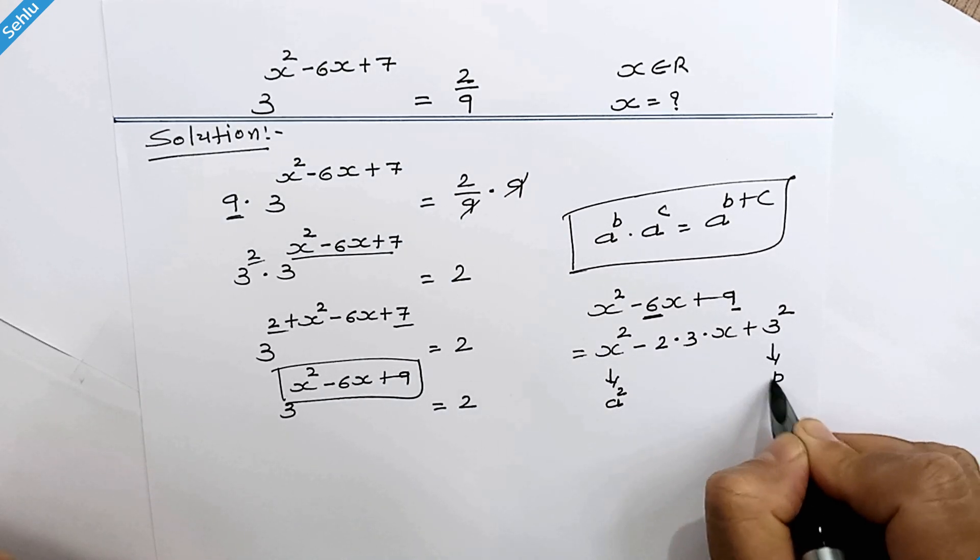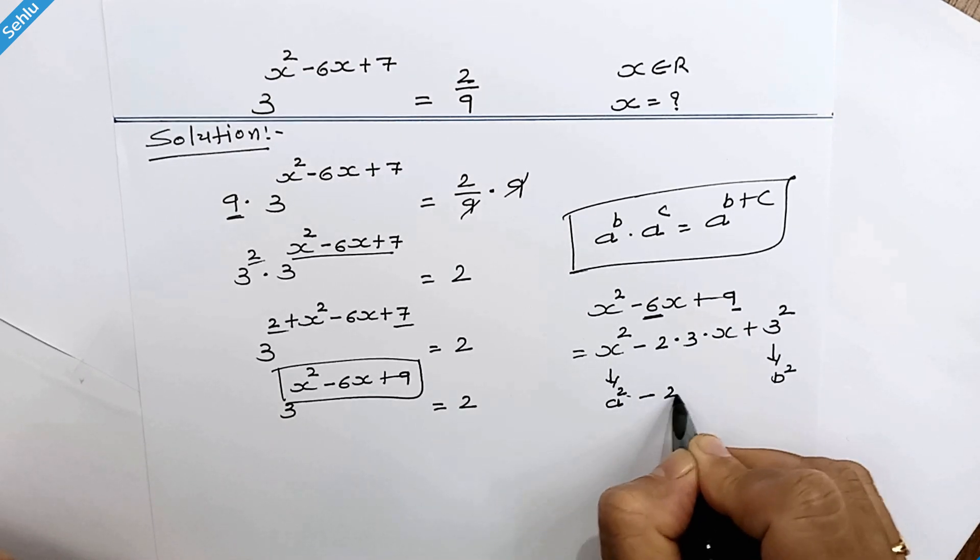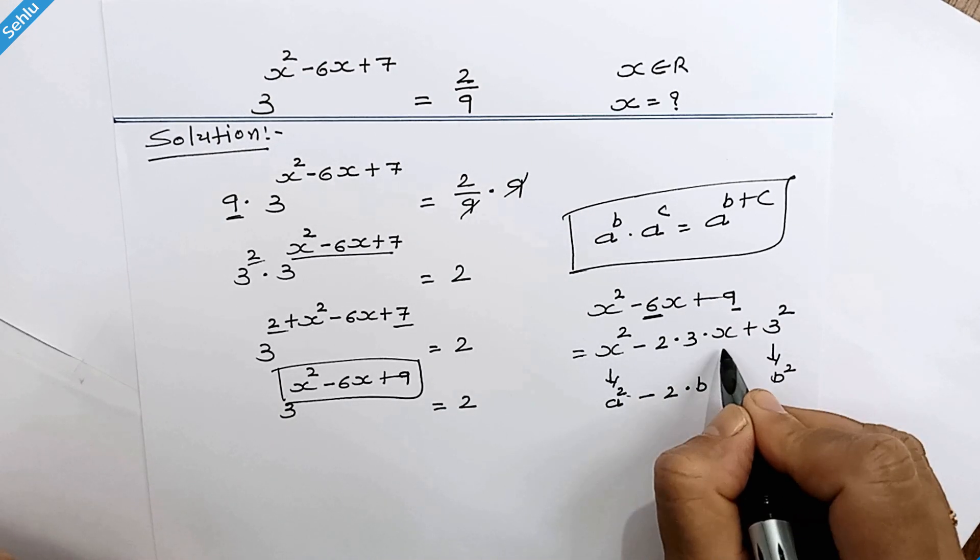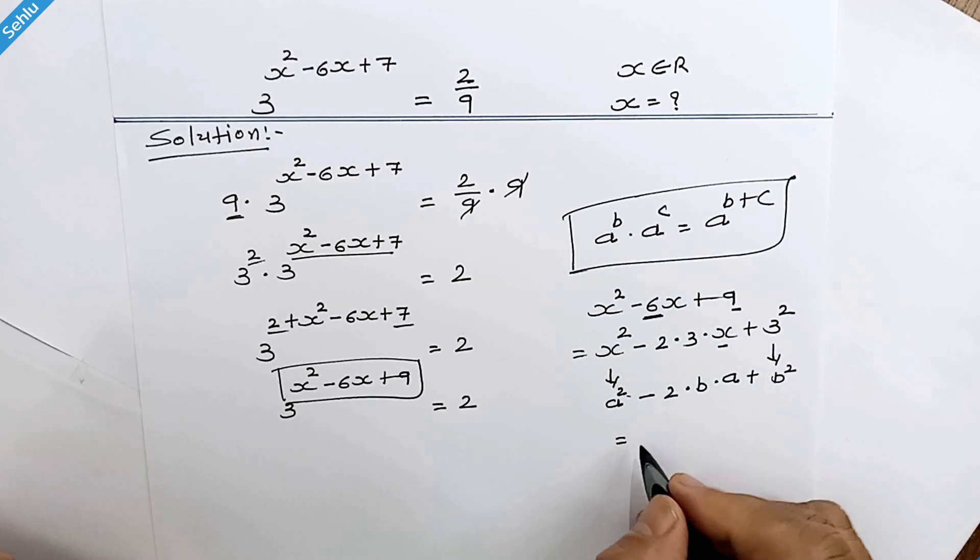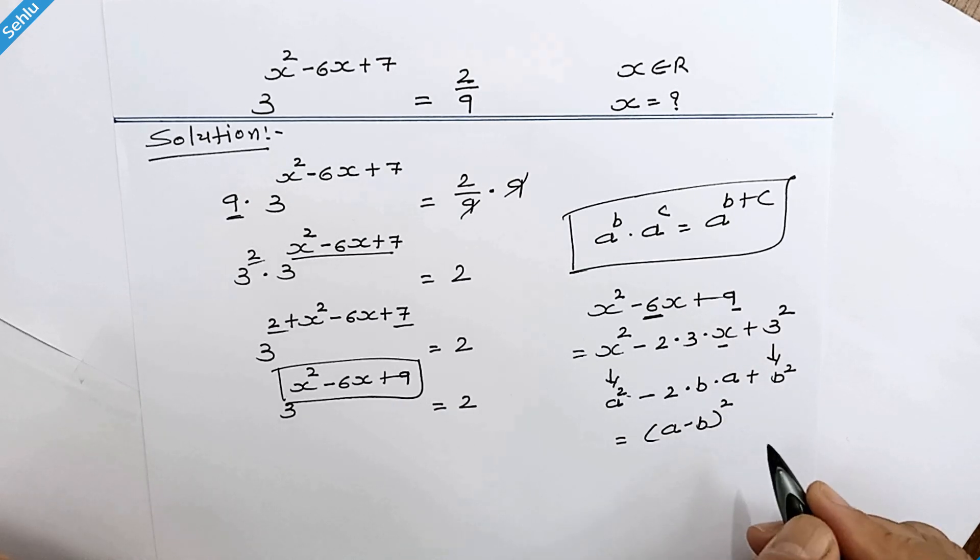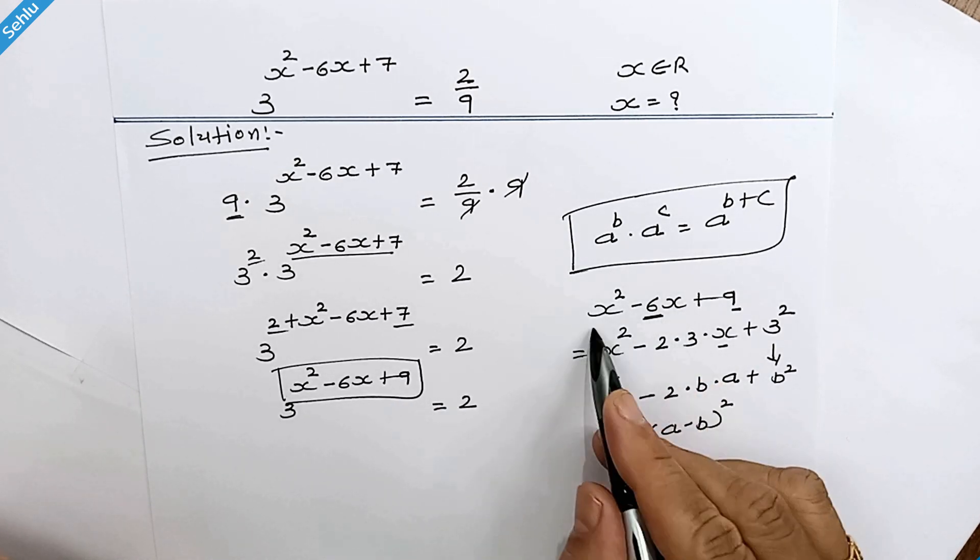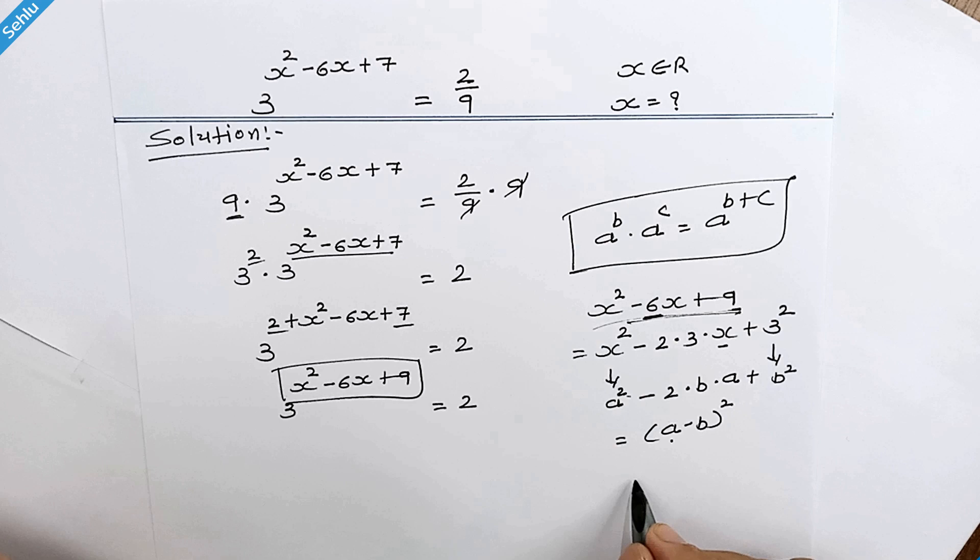Then 2 times 3 is b and x is a. And it can be (a - b)². So we will write this in that form. So it will be (x - 3)².